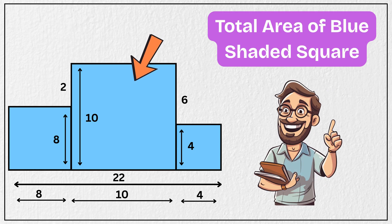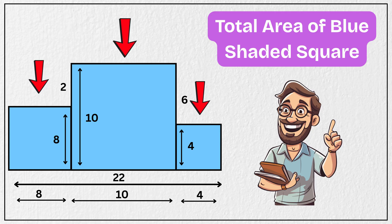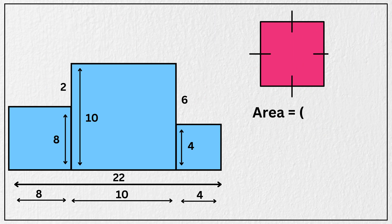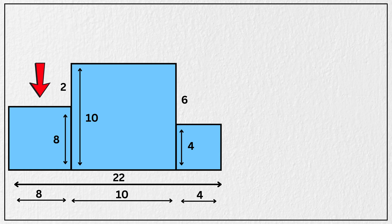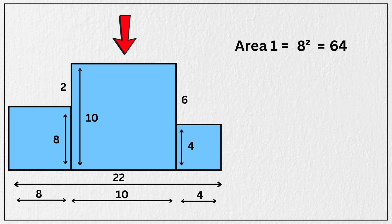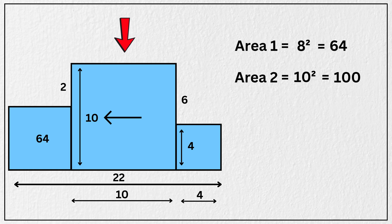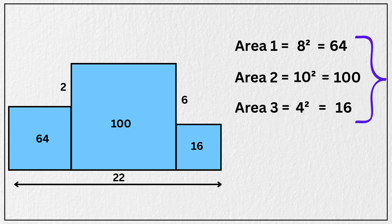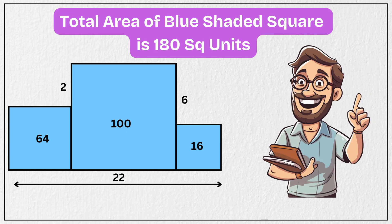Now to find the total area of the blue shaded region, we simply calculate the area of each square and then add them together. We know that the area of a square is given by the square of its side length. So we have, this first square has a side length of 8, so its area is 8 squared, which is 64. This middle square has a side length of 10, so its area is 10 squared, which is 100. This third square has a side length of 4, so its area is 4 squared, which is 16. Now adding them all together, we have 64 plus 100 plus 16 equals 180. So the total area of the blue shaded squares is 180 square units. And that's our answer.